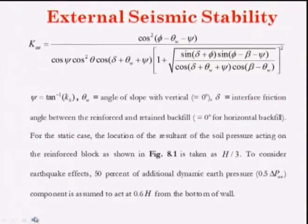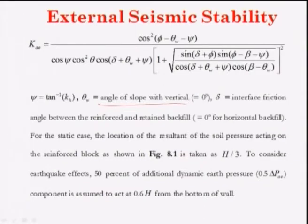K_AE is calculated as per FHWA 2001: K_AE = cos²(φ − θ_w − ψ) / [full Coulomb-Mononobe-Okabe denominator], where ψ = tan⁻¹(k_h), θ_w is the angle of the wall slope with the vertical (0° for a purely vertical wall), and δ is the interface friction angle between reinforced and retained backfill (0° for horizontal backfill).